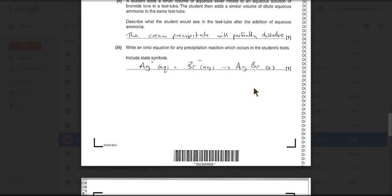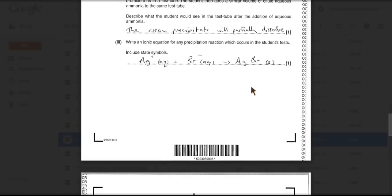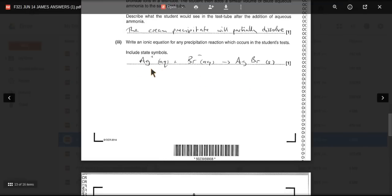The precipitation reaction that's taking place. The silver ions from the silver nitrate solution are reacting with the bromide ions from the bromide solution in the tube. And there's your silver bromide precipitate. So that's the cream precipitate.